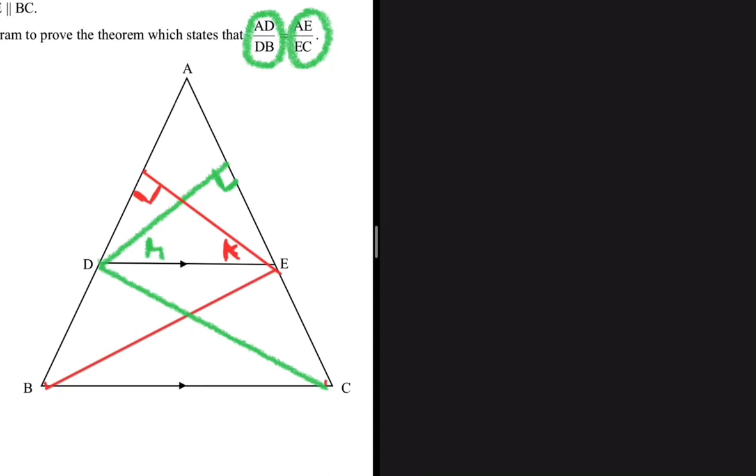We can now move to step number two. Step number two, we need to pay our attention to triangle ADE and triangle DEB. We need to determine the ratios of the areas of those two triangles.